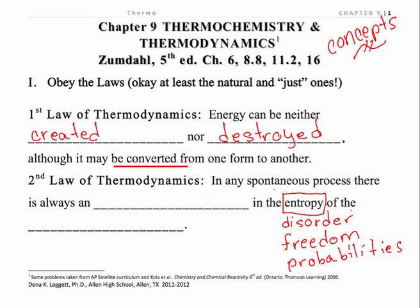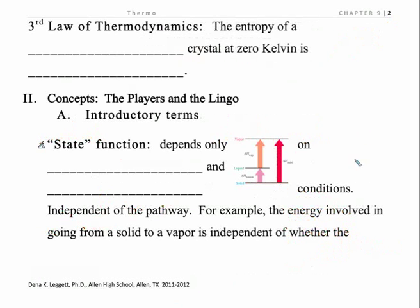In any spontaneous process — and that's another important concept — there is always an increase in the entropy of the universe. That's not something we can readily measure, but we can make some estimates. The third law of thermodynamics says — and you really should know these — that the entropy of a perfect crystal at zero Kelvin is zero. When we talk about entropy, it's always going to be a positive value for the entropy of a substance.